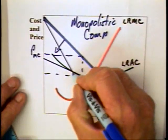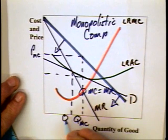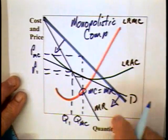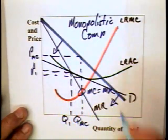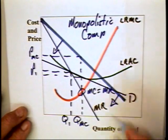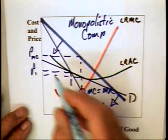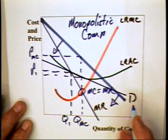And the result is that it might end up producing in the long run at a quantity Q1 selling at a price of P1. You will notice that the demand curve is tangent to the long run average cost curve, which means the price is equal to average cost, which means the firm is not making any economic profits.